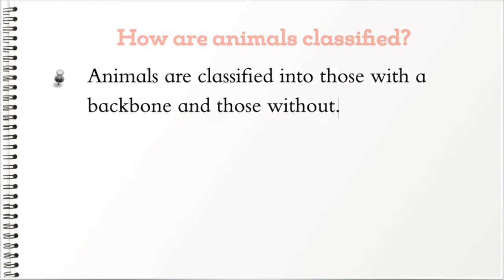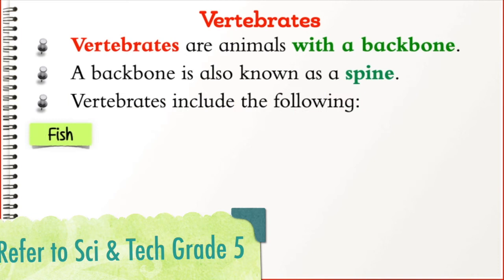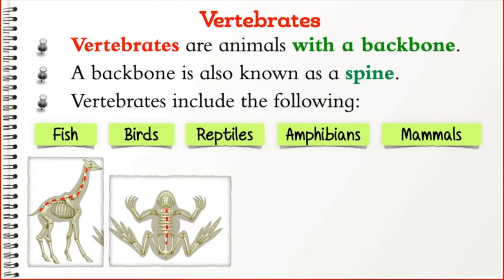How are animals classified? Animals are classified into those with a backbone and those without. Vertebrates are animals that have a backbone, and invertebrates are animals without a backbone. A backbone is also known as a spine.